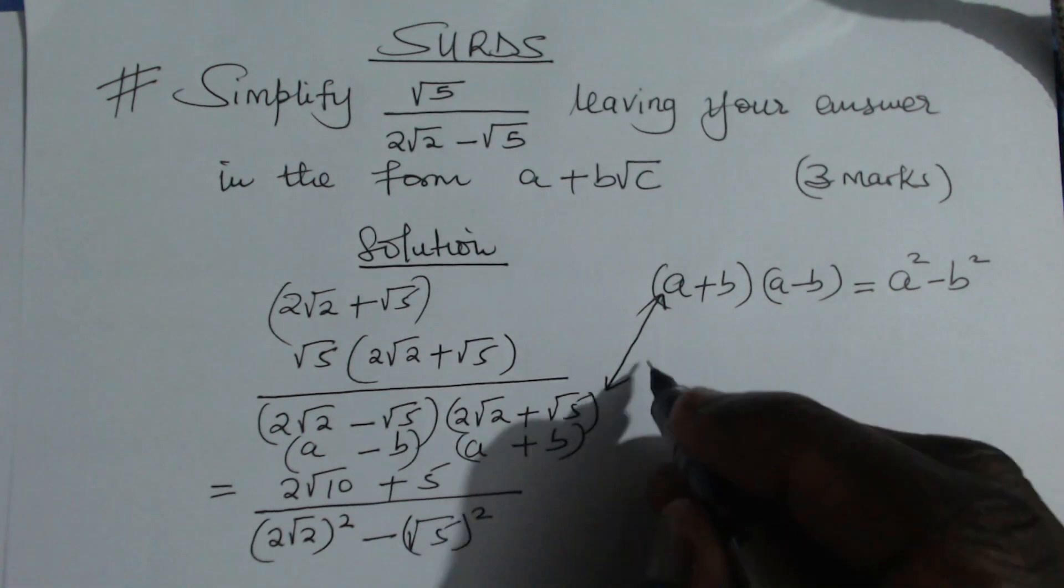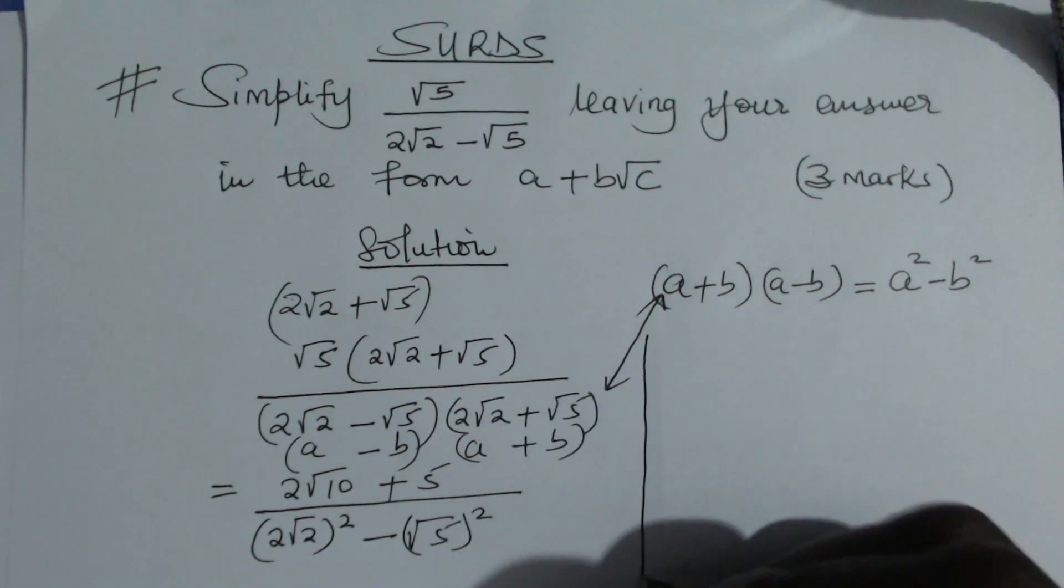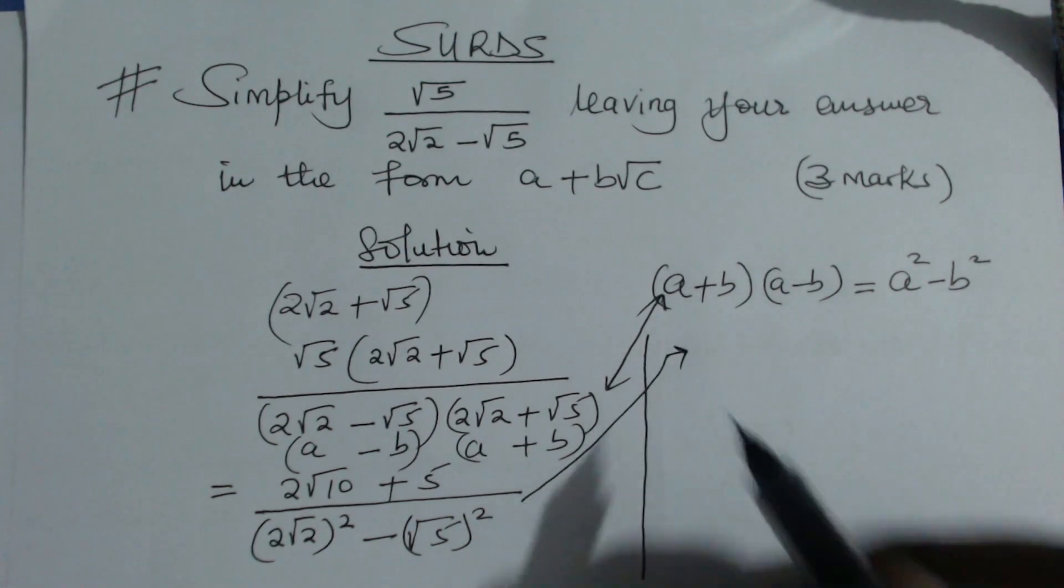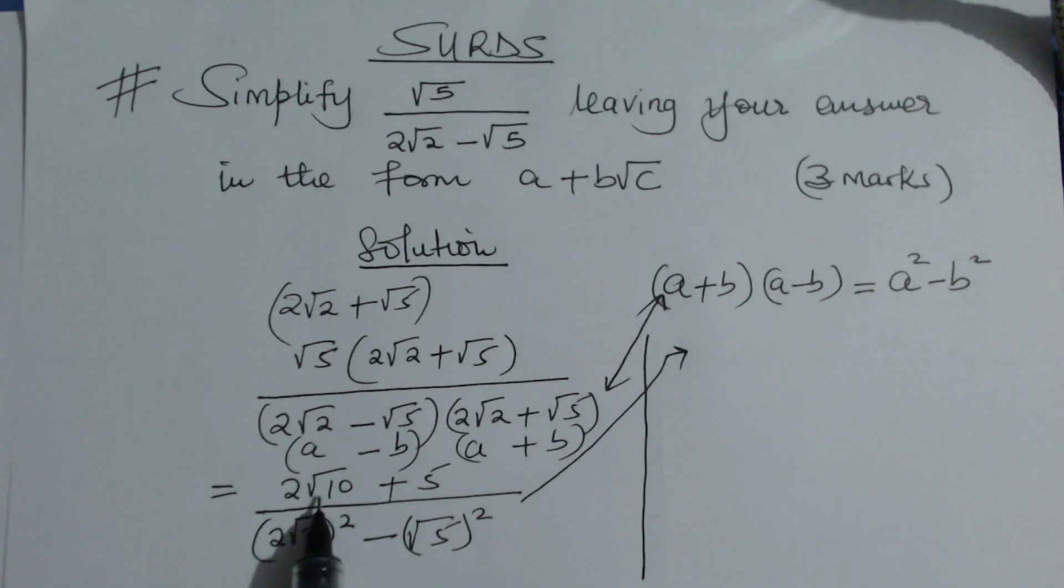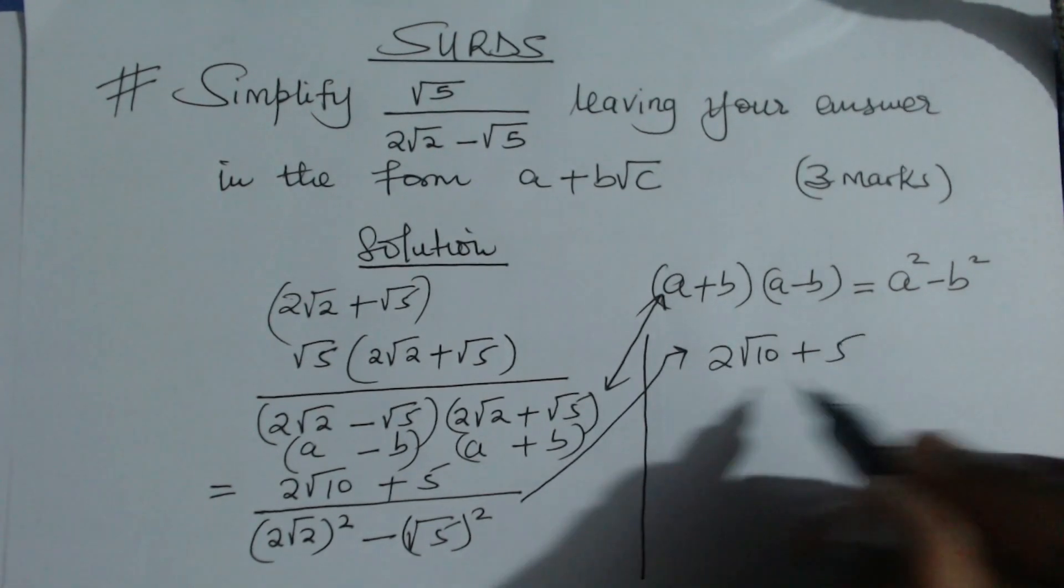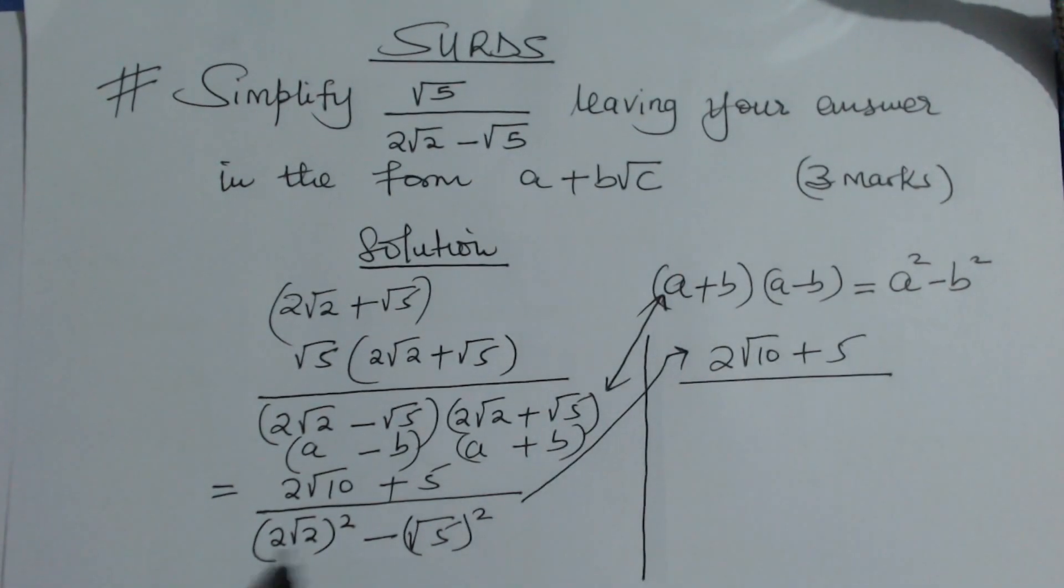So let us proceed from there. From here, you're going to have: the numerator is 2√10 + 5, divided by... for the denominator, 2√2 squared will give 8, then √5 squared will give 5.